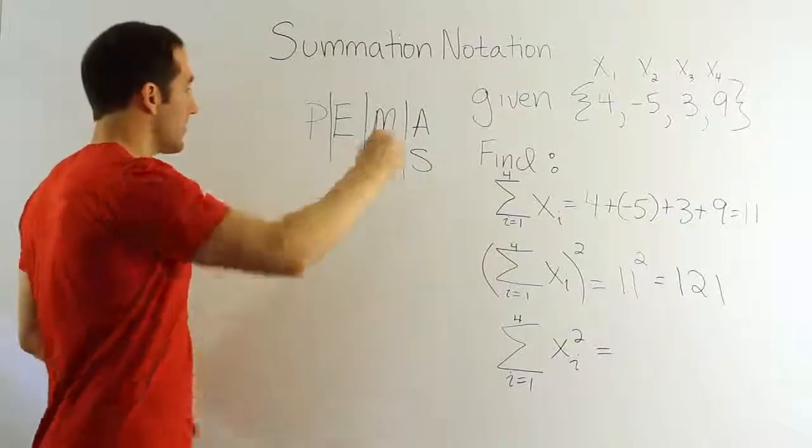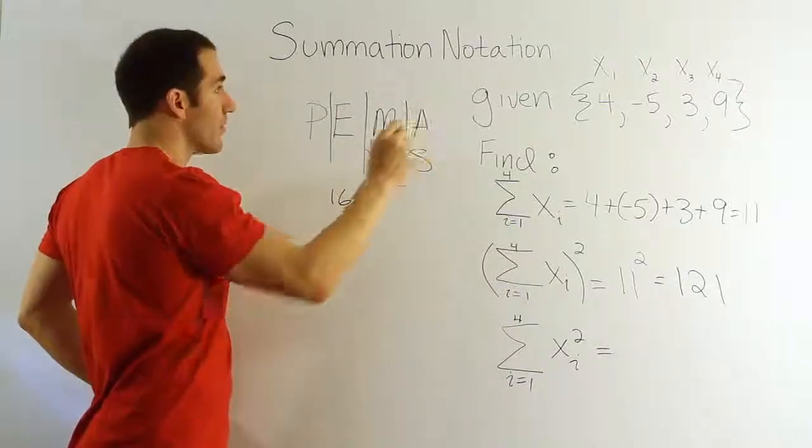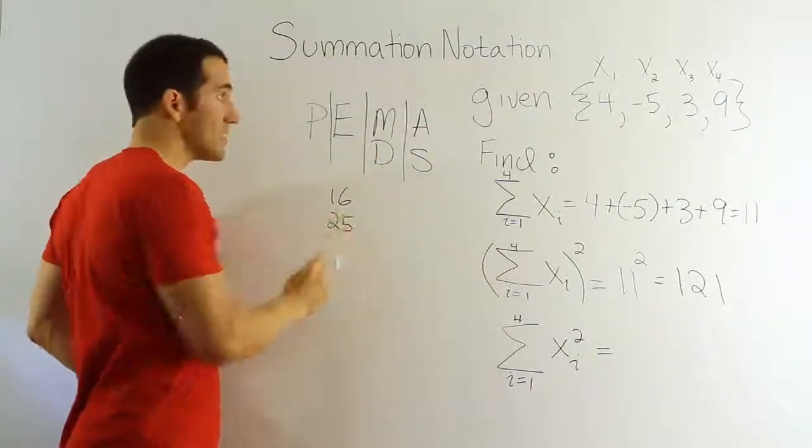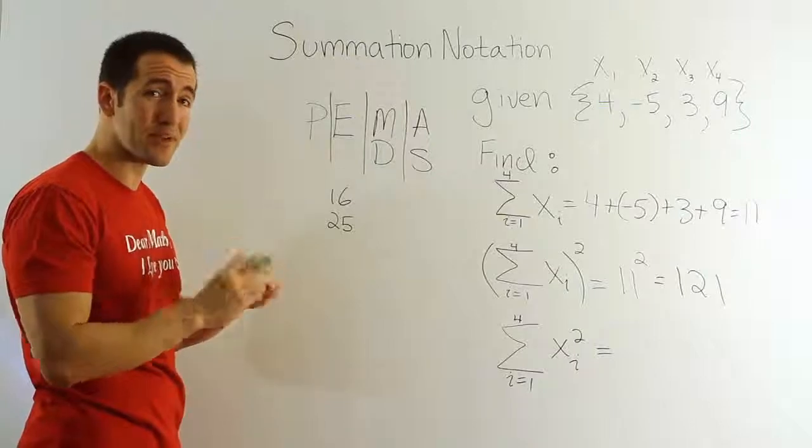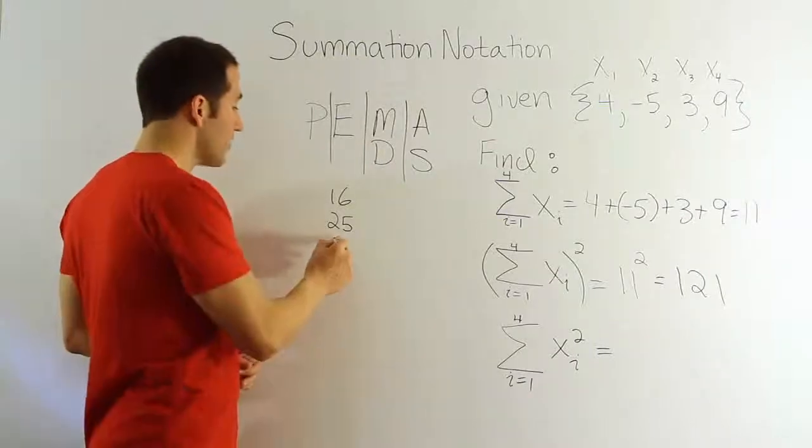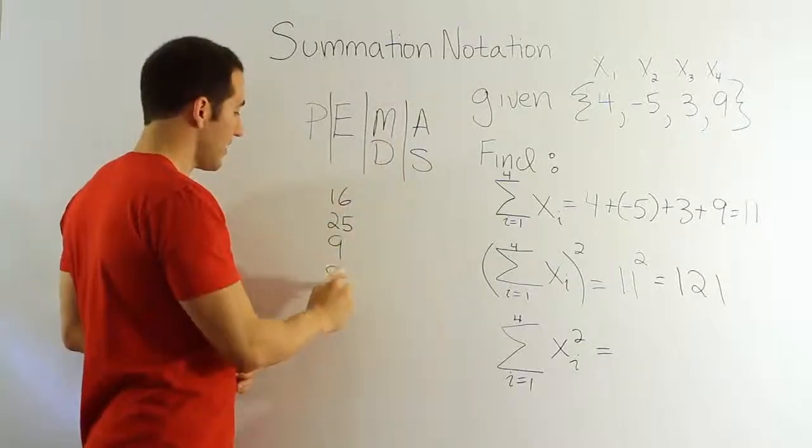Alright, let's square all the x values and see what we get. If we square 4, we get 16. If we square negative 5, remember, squaring a negative number gives you a positive result, because negative 5 times negative 5 is positive 25. Two negatives multiplied give you a positive. 3 squared is 9, and 9 squared is 81.